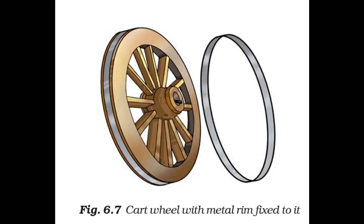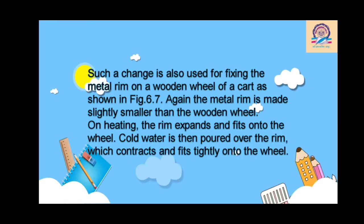Let's take another example. Have you ever seen a cartwheel which has a metal rim? Have you ever wondered how this metal rim is fixed on the wheel? Here also, expansion and contraction take place. The metal rim is made slightly smaller. When that metal rim is heated, it expands and fits on the wooden wheel. After it cools down, that rim tightly fixes on the wooden wheel of the cart.